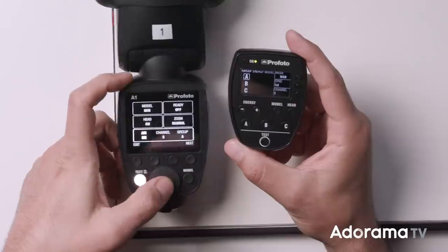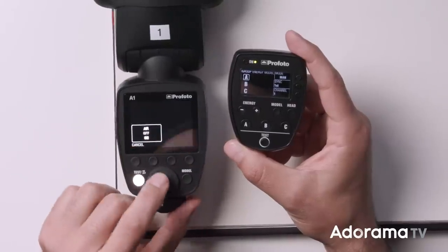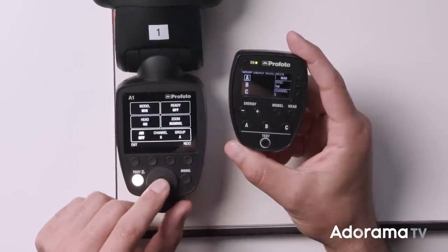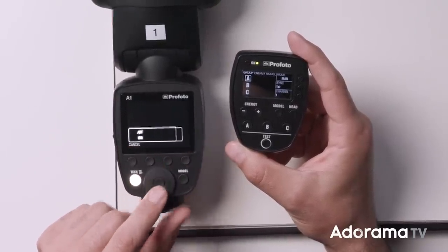Every flash will have something similar where you actually have to enable the radio system because they'll have other systems of wireless available to you, like infrared or optical. So what we want to do is make sure that we select the radio function. So here on this remote, we would select air. If it's set to off, we would choose on. So make sure the radio mode is turned on.